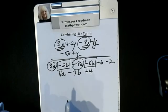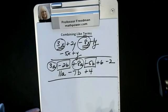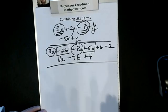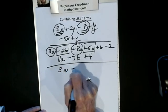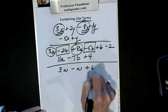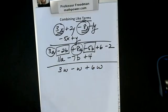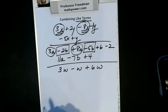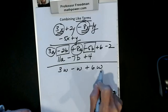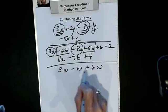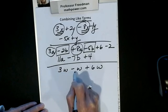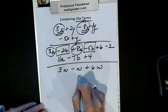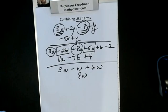It's possible to have more than two terms to combine. Let's say I have 3w minus w plus 6w. To be a like term, the variable part — the part with the letter — has to be identical. These are all w terms. I have 3 minus 1, which is 2, plus 6: I get 8w.